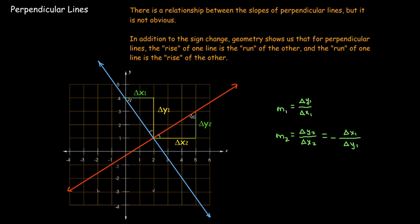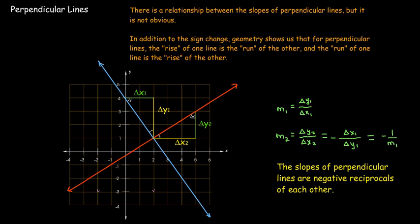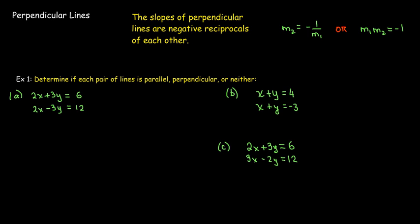And so, what it tells me is that the relationship between the slopes of perpendicular lines is that they are opposite in sign and reciprocals of each other. Now, we could also think of it as saying that if you have two perpendicular lines, the product of their slopes has to be negative 1.